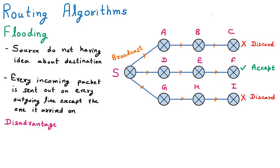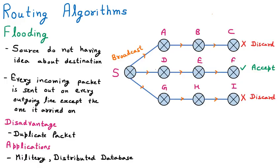The applications of flooding are in the military field and distributed databases. In the military, we don't know which area to target so we traverse all areas. Similarly, in distributed databases, data is spread across multiple locations so we have to search all locations. These are examples where packets must be sent in multiple directions.